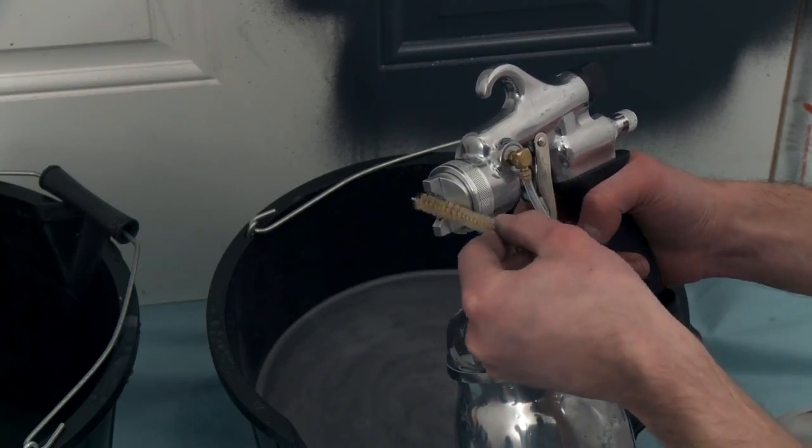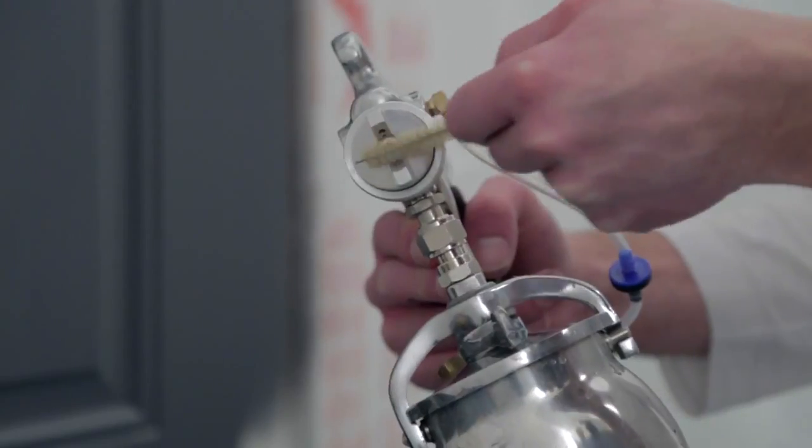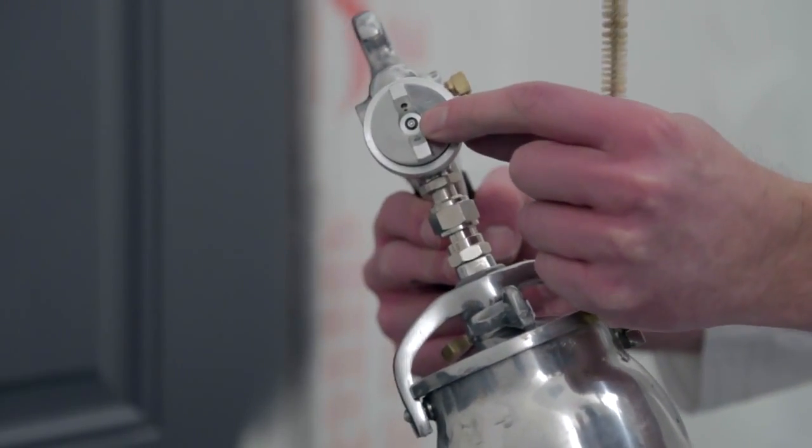Lastly, use the brush supplied in the kit to clean away any residue of paint left on the nozzle before putting the spray gun away.